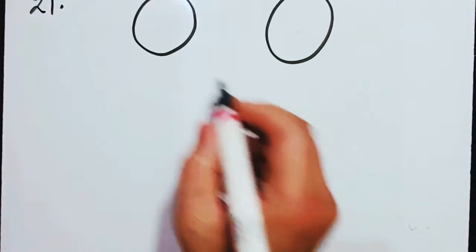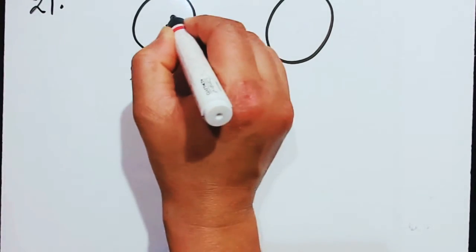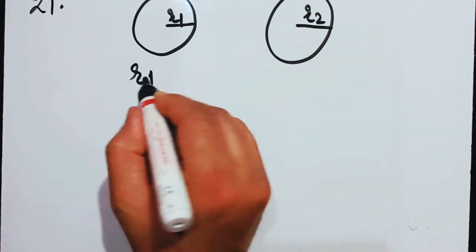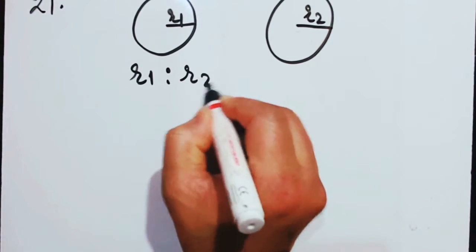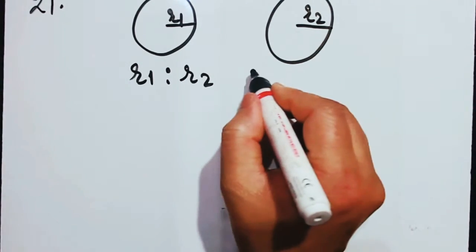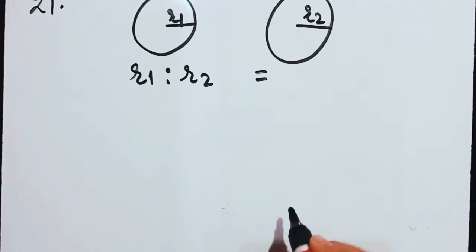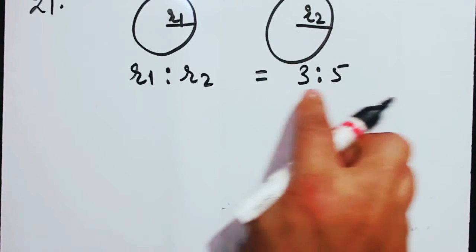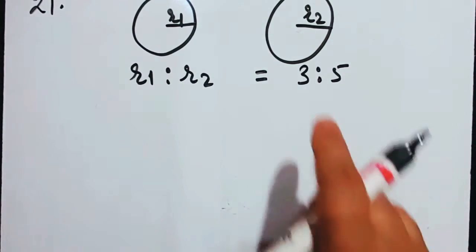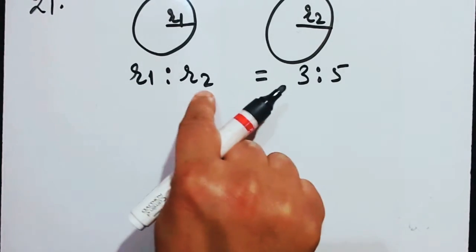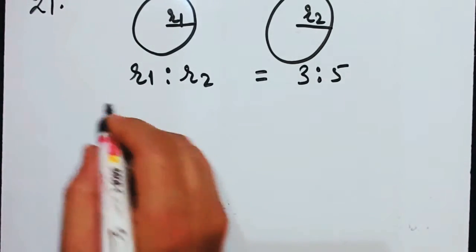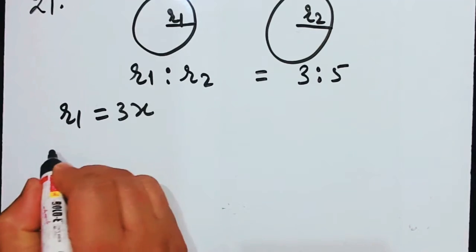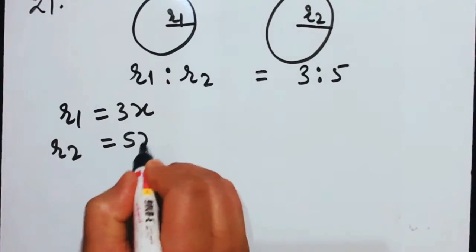They are saying R1 is to R2 equals 3 is to 5. This means R1 equals 3x and R2 equals 5x — you always take a common factor when a ratio is given.